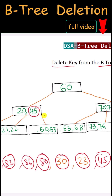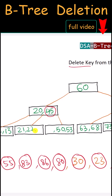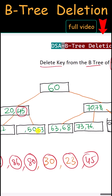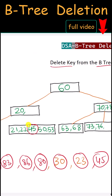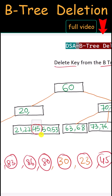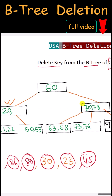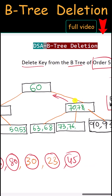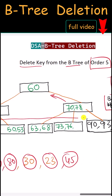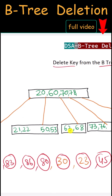Next we have key 45, which is also an internal node. The left child has the minimum number of keys and the right child also has the minimum number of keys, so we merge the left child, right child, and this key together, then delete 45. Now the parent node has only a single key, but we need a minimum of two. The right sibling also has the minimum number of keys, so we merge these three nodes together.